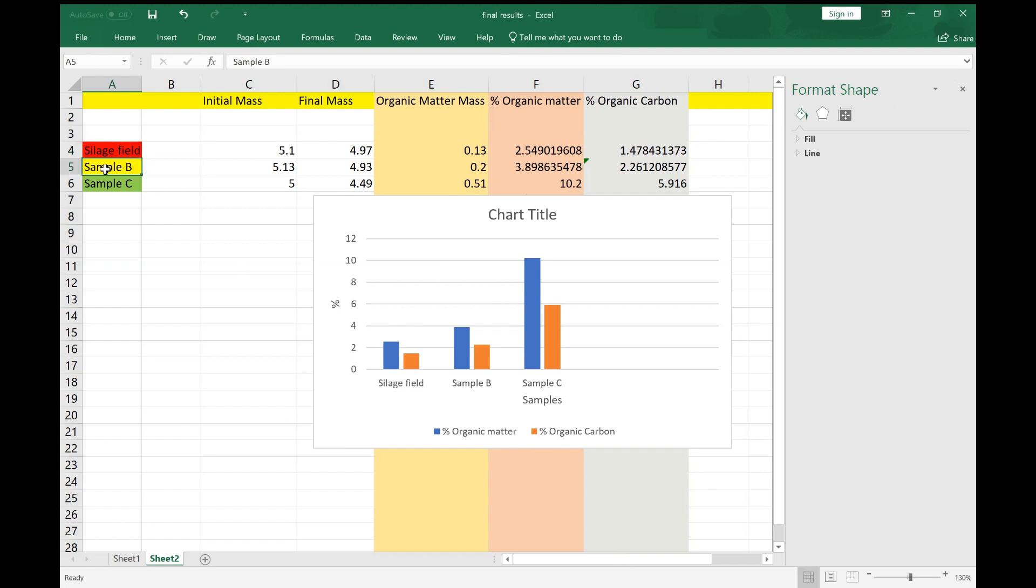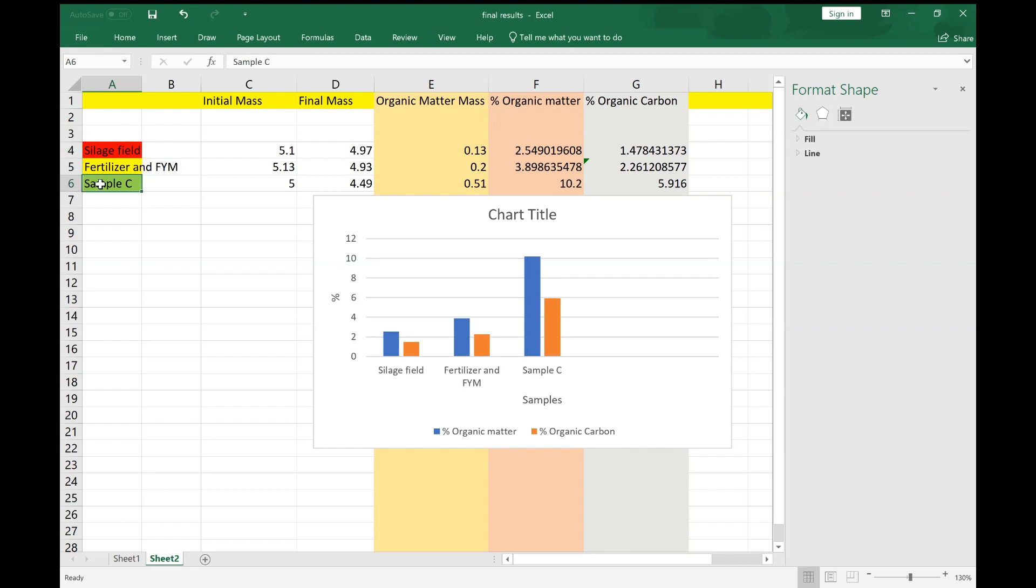Hit enter, and that changes that. Sample B then is fertilizer and farm yard manure, and sample C is just farm yard manure. And then I can have my label of samples on the bottom, and then I could have chart title: the percentage organic matter and percentage organic carbon.